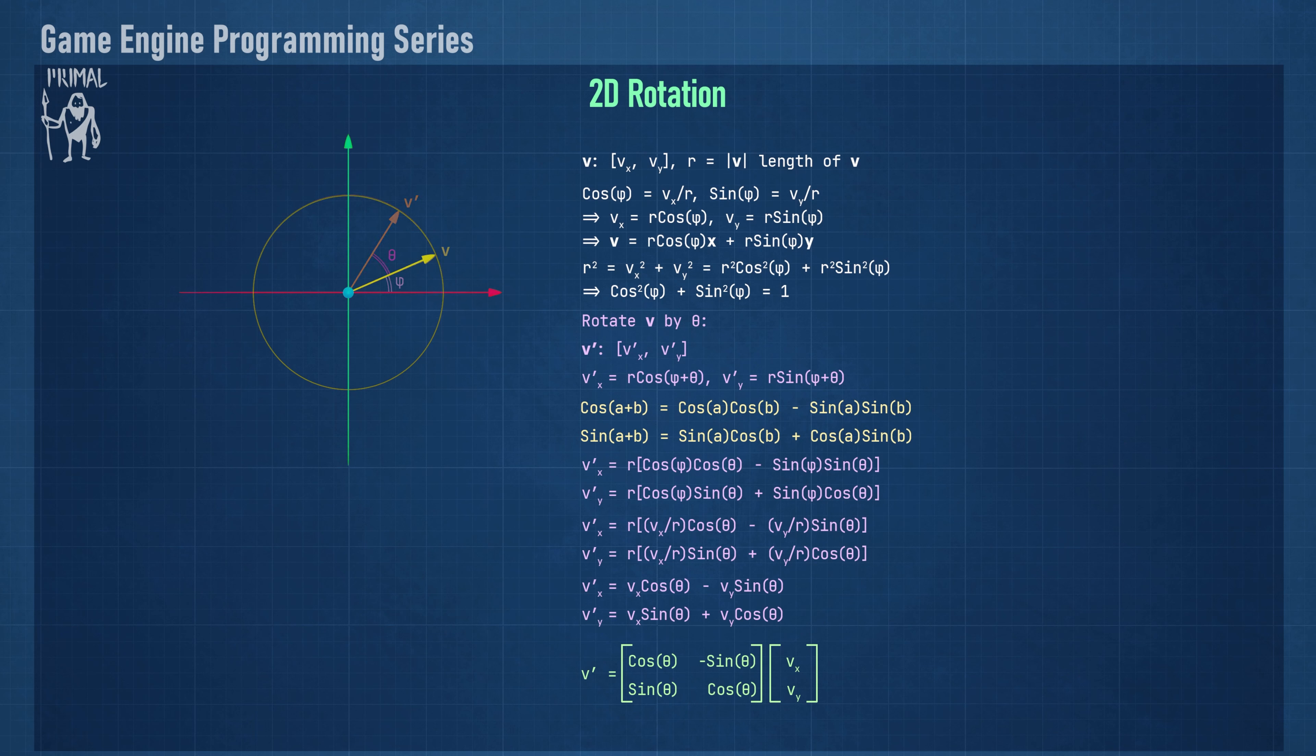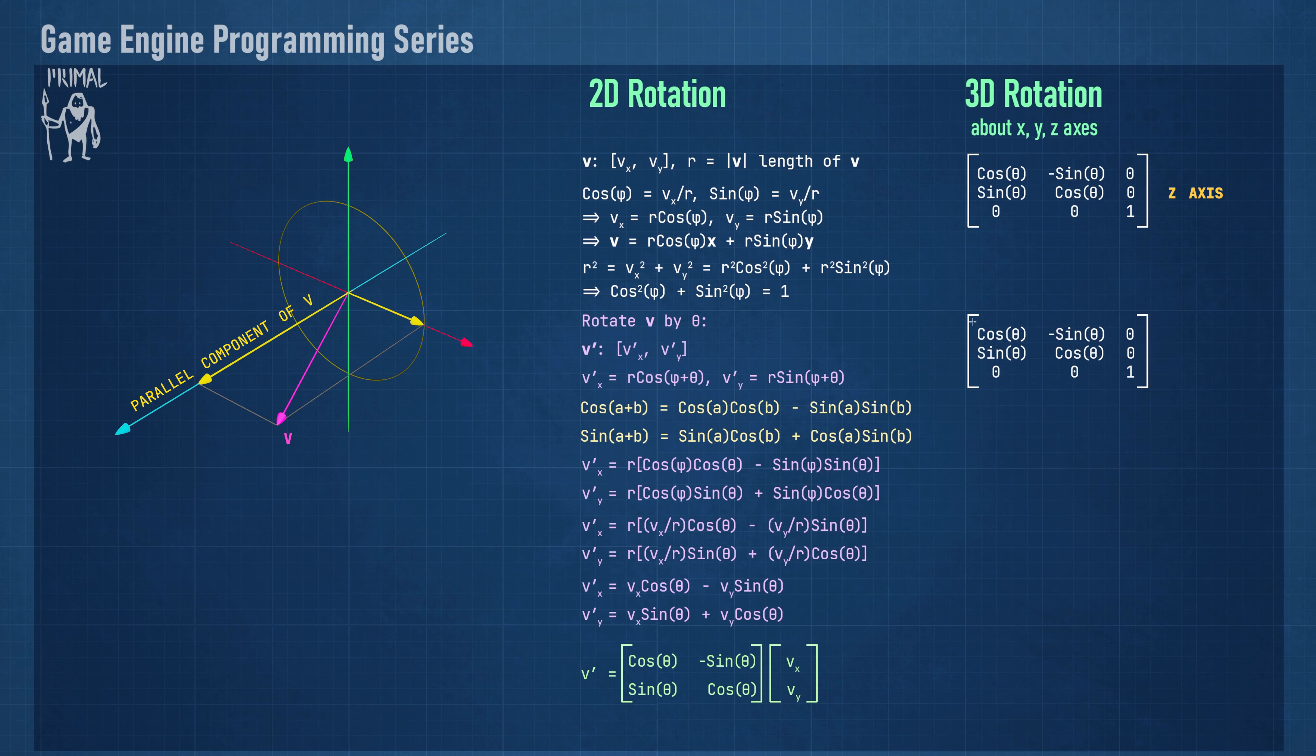Writing this in matrix form, we get the rotation matrix in two dimensions. Going to three dimensions, you can see that only the vector components on the plane of rotation are affected. The component that's parallel to the axis of rotation and therefore perpendicular to the plane of rotation remains the same. So it's rather easy to expand this matrix for three-dimensional rotations. We simply add an extra row and column with zeros and a one that will copy over the component that's not affected. This particular matrix is the rotation matrix about the z-axis.